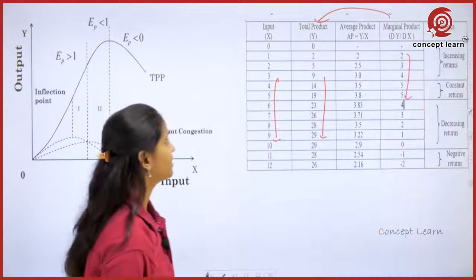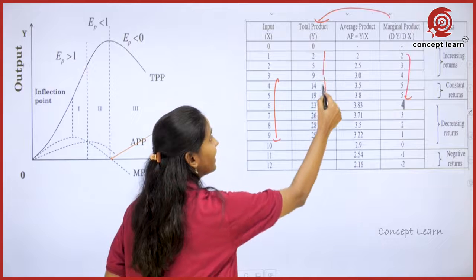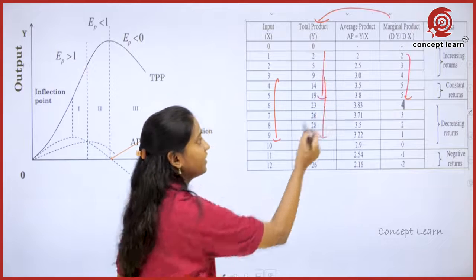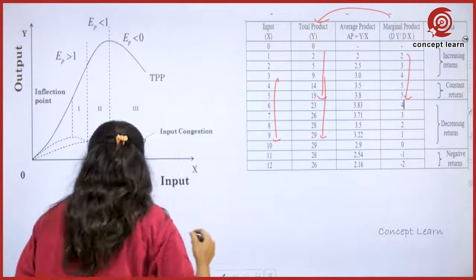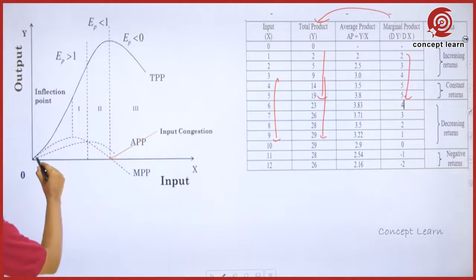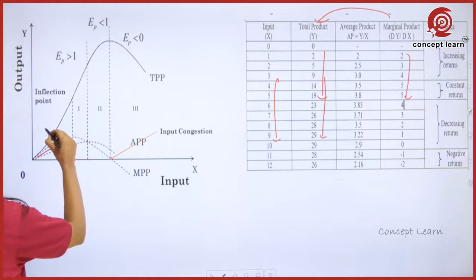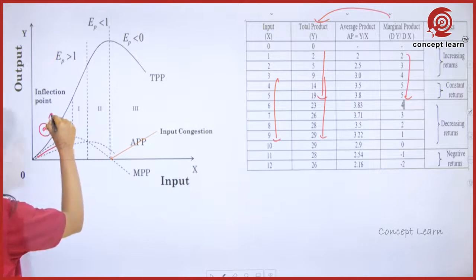Now suppose MPP is increasing. When MPP is increasing, TPP increases at the increasing rate.